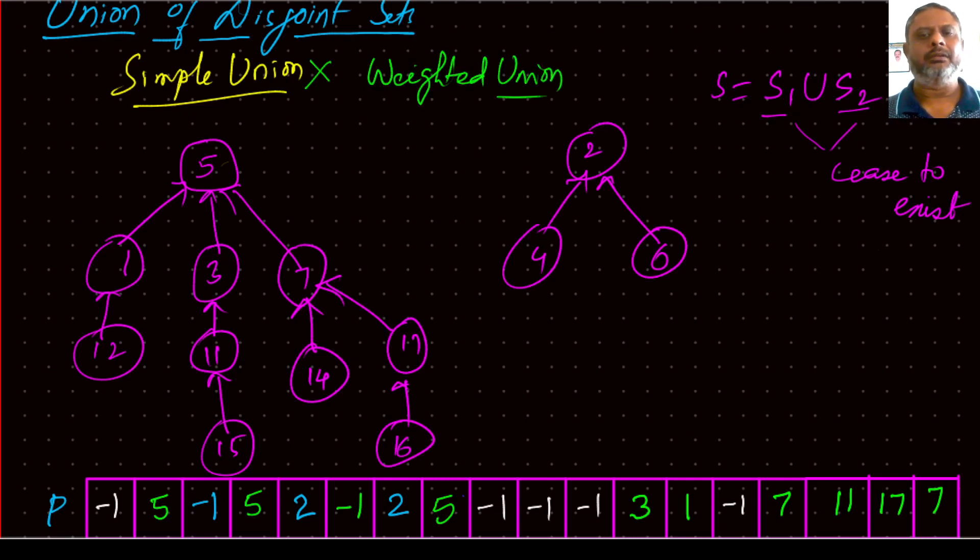In weighted union, we just make a count of the nodes in both the sets. And here we found that 1, 2, 3, 4, 5, 6, 7, 8, 9, 10. So the count here is 10 and count here is 3. Therefore, it is better to disturb set with a smaller count.